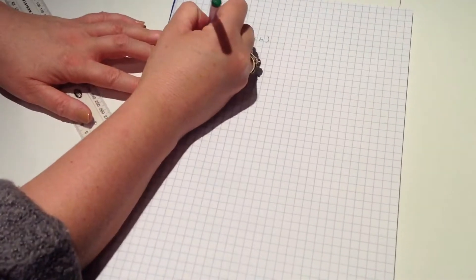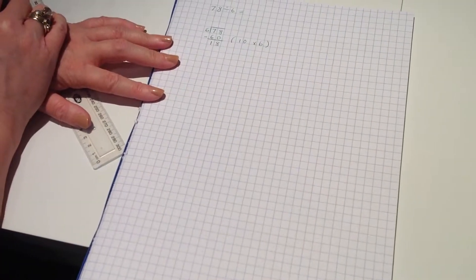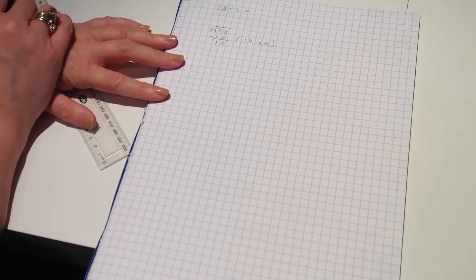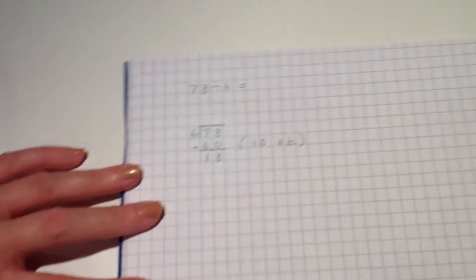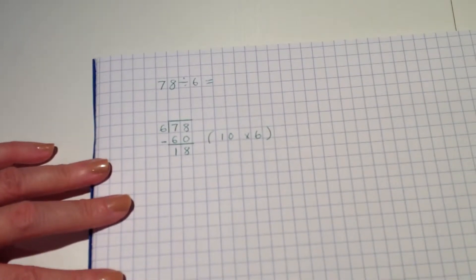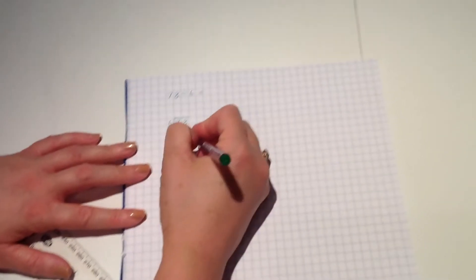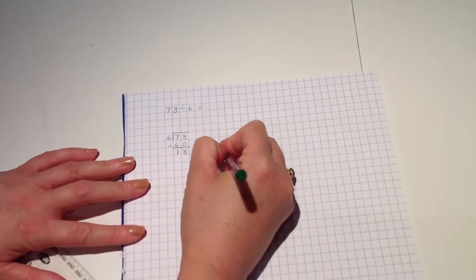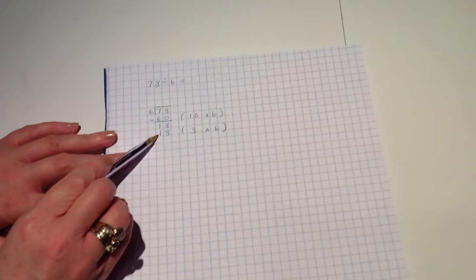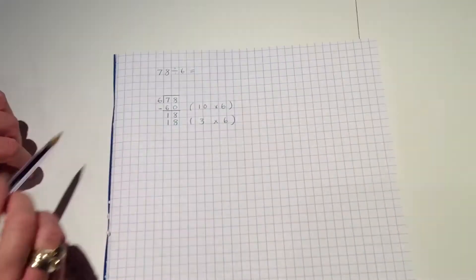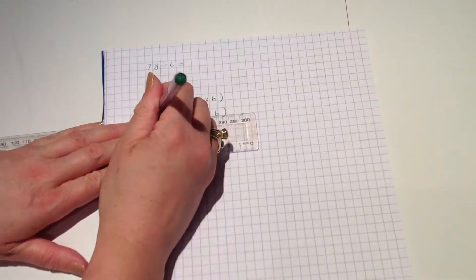Now, what I'm going to do is I'm going to take that 60 out of the 78 so that I know how much is left that I still need to divide. So I've got eight take away nothing, which is eight. Seventy take away 60 or seven tens take away six tens leaves me with one ten.